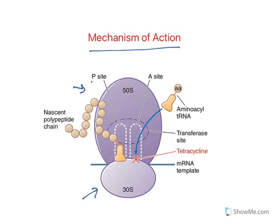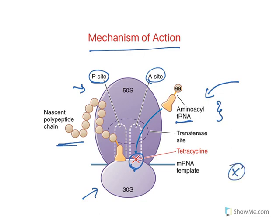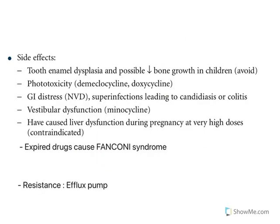Looking at the mechanism of action: at the 30S subunit there is a P site with a growing polypeptide chain. The incoming aminoacyl-tRNA comes and binds at the A site. Tetracyclines block this step — the incoming aminoacyl-tRNA cannot come and bind at the A site. This is how tetracyclines block protein synthesis and cause protein synthesis inhibition.